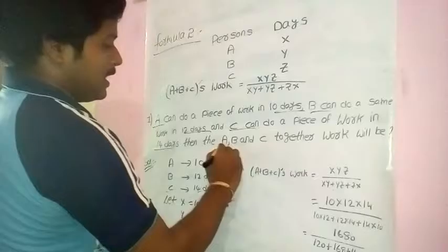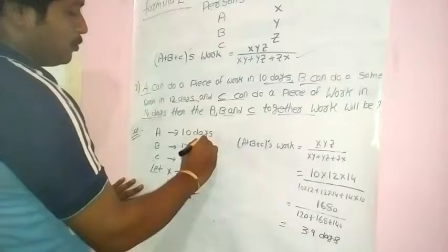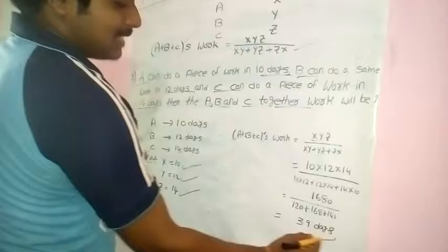They ask about A, B, C together, which means A plus B plus C's work equals, according to the formula, XYZ divided by (XY plus YZ plus ZX). Substituting the values X equals 10, Y equals 12, and Z equals 14, we get the answer as 3.9 days, approximately 4 days to complete the entire work.